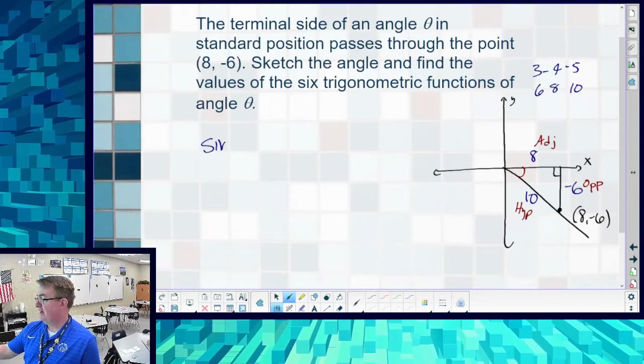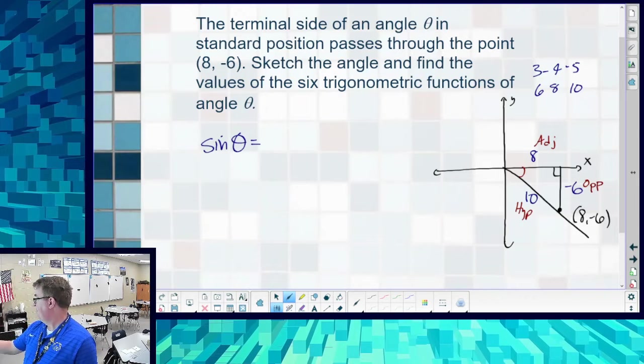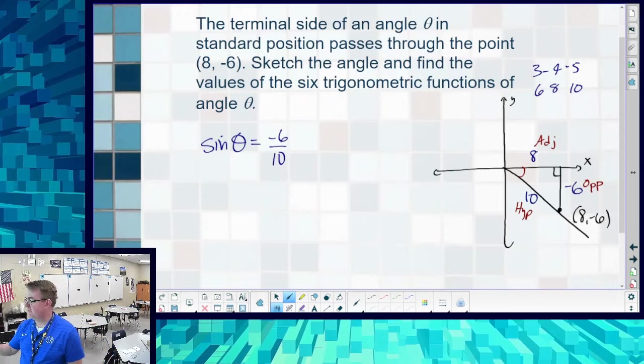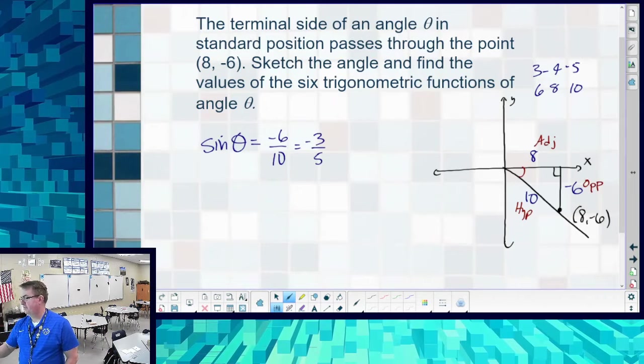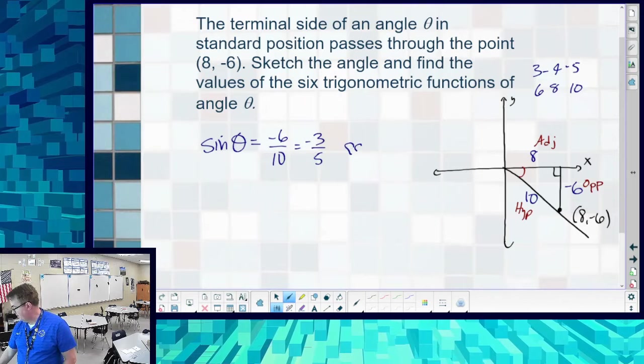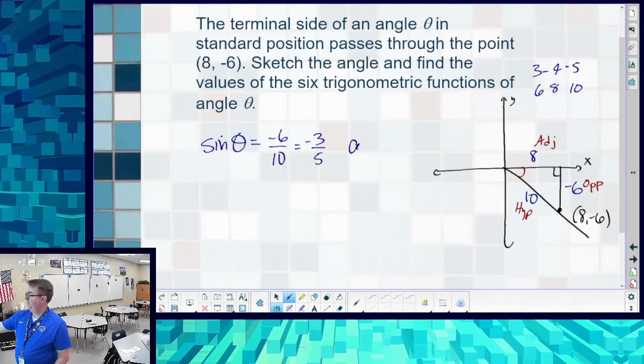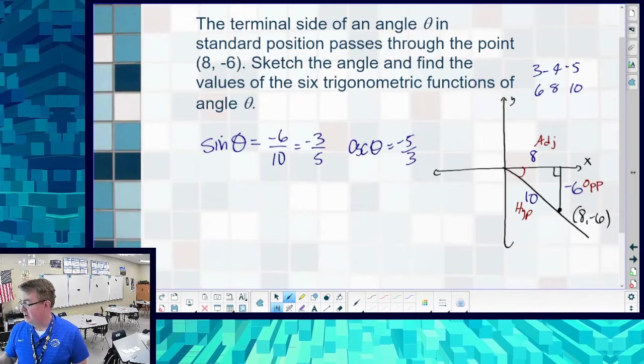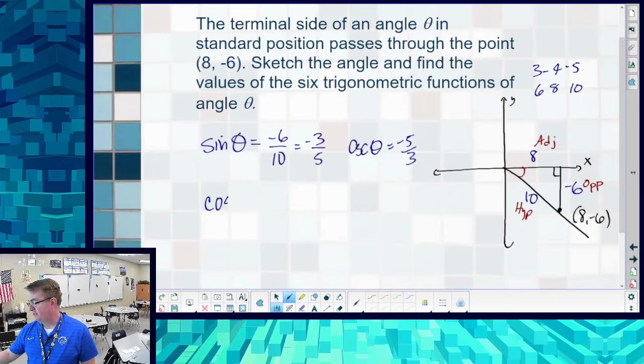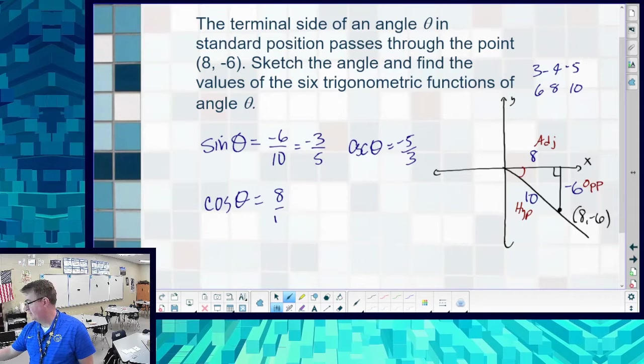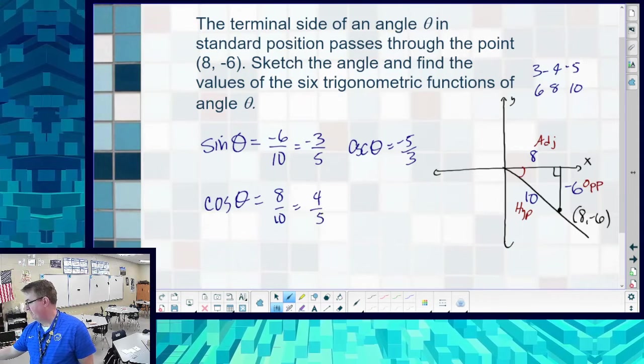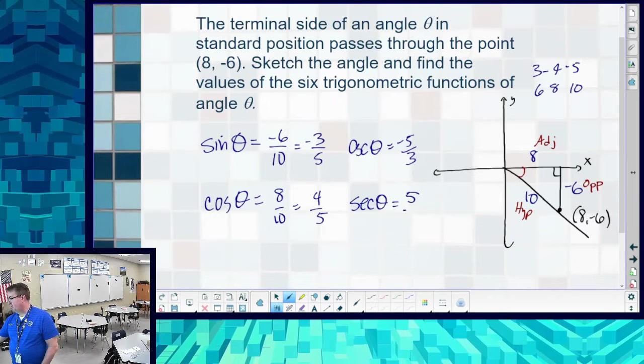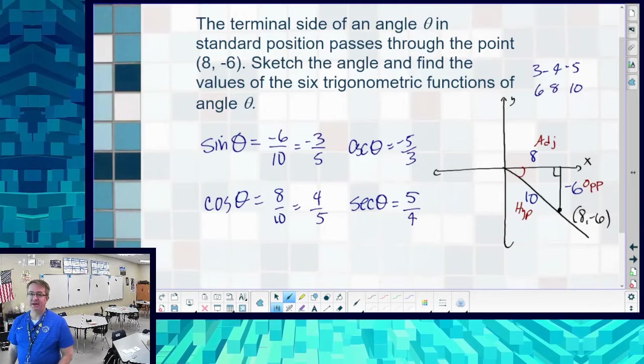We're just going to go through and run it. Sine of theta is opposite over hypotenuse. Opposite is -6 over 10. Do you have to reduce it? Yes, because we're not savages. So that's -3/5. That means that cosecant is going to be -5/3. Now, you could go as 10 over -6. The negative, it doesn't matter what part it is. Cosine is going to be 8 over 10, and we'll reduce that to 4/5. And if you can reduce it, the great part is that when you go for the cousin function, you don't have to worry about reducing it because you already did.